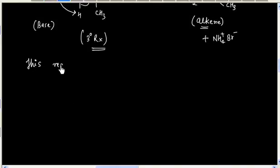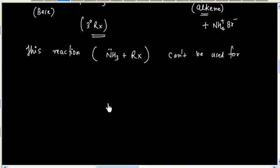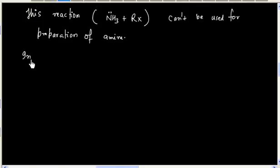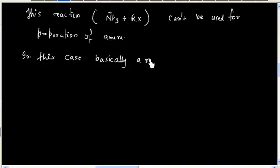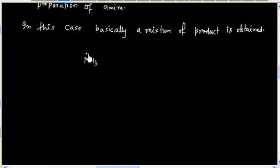This reaction — the reaction of Ammonia with alkyl halide — cannot be used for the preparation of pure amine. In this case, basically a mixture of products is obtained. This happens because Ammonia can act as a base or it can also act as a nucleophile.